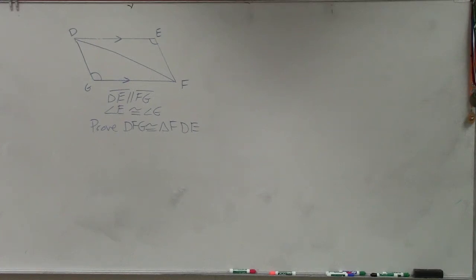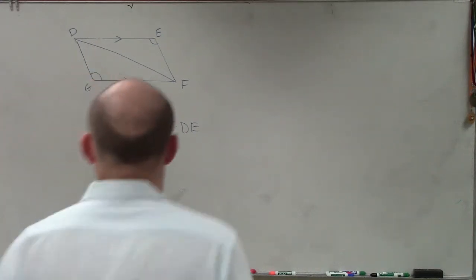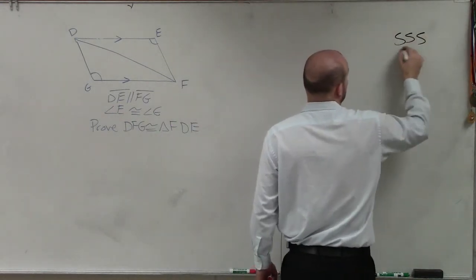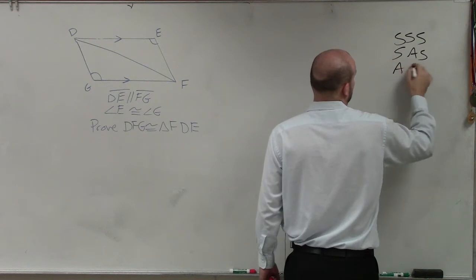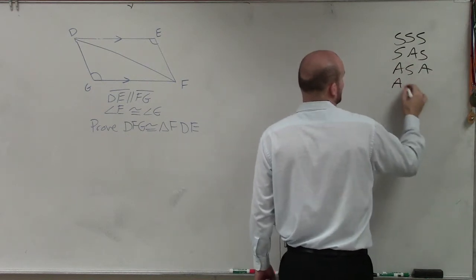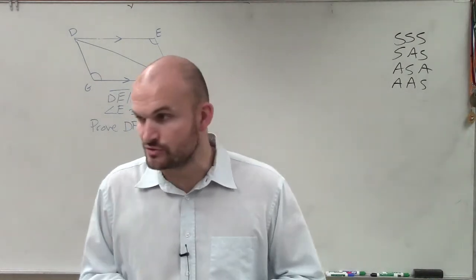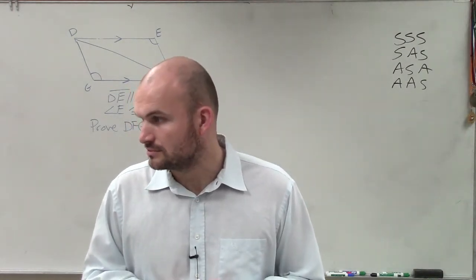So anyways, when we're looking at this one, again, we want to write a proof, right? And so if we're trying to prove these triangles, so far in this class we talked about side-side-side, side-angle-side, angle-side-angle, and angle-angle-side. That's the only ways we've learned so far to show congruence between two triangles.